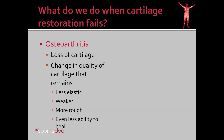We talked a little bit about cartilage restoration in the other videos. What do we do when cartilage restoration fails? At that point, the term is really osteoarthritis. Now, osteoarthritis is loss of cartilage like we saw in the acute cartilage injuries in the other videos. However, there's also a change in the quality of cartilage that remains in the knee. And this is what's different between acute cartilage injury and arthritis.